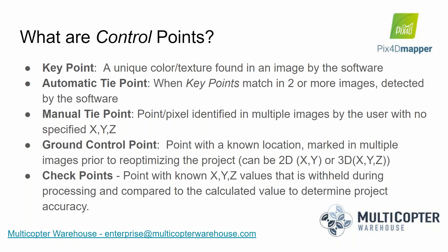When working within PIX4D, there are a number of different types of points to keep in mind. The first type is a key point — a unique color or texture found by the software in an image as it goes through each image on a pixel-by-pixel basis. When the software finds two or more images with matching key points, that key point becomes an automatic tie point, which is the basis of what's created at the end of step one processing.